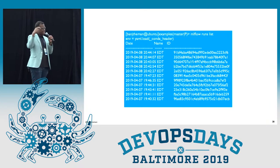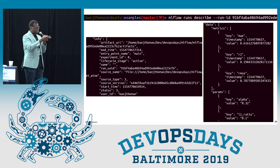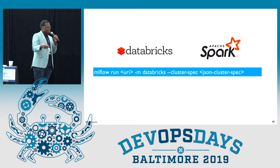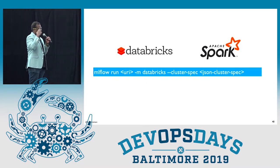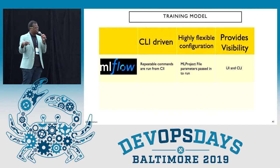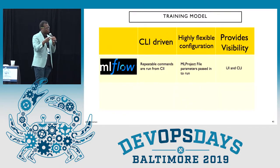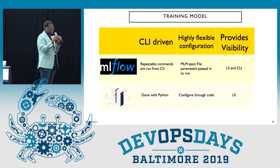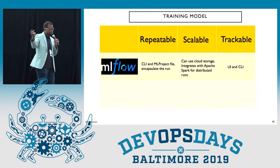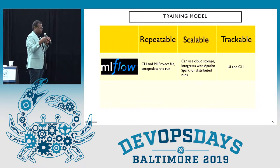MLflow also has a CLI interface to see all the runs that were previously executed, allowing you to look at results through JSON output. It's also integrated with Databricks, which is a platform to run Apache Spark at scale — you can just point your entire pipeline to a Databricks cluster and allow that to scale out. To reiterate: MLflow has CLI-driven commands, a flexible configuration file done through code, and provides visibility through the UI and CLI. TFX is done through Python code, provides a UI to see what's going on, and supports Kubeflow for scaling.